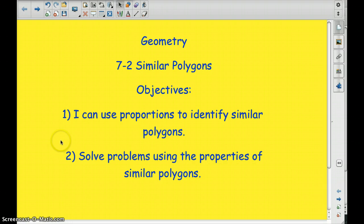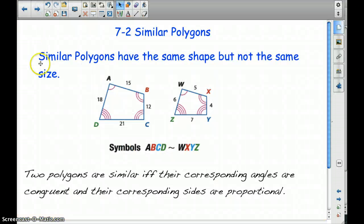You can use proportions to identify similar polygons and solve problems using proportions of similar polygons. Similar polygons have the same shape, but not the same size. And we need to write this definition down.